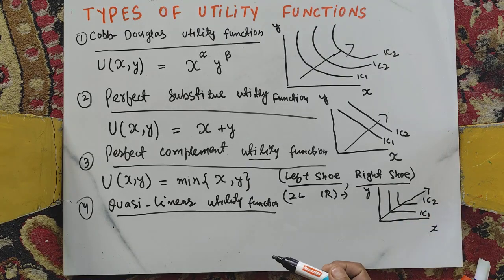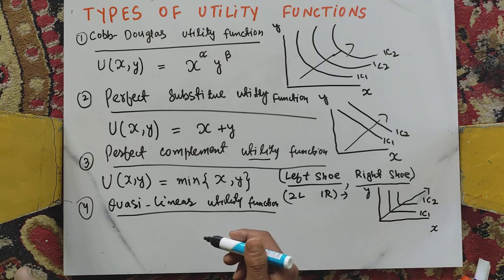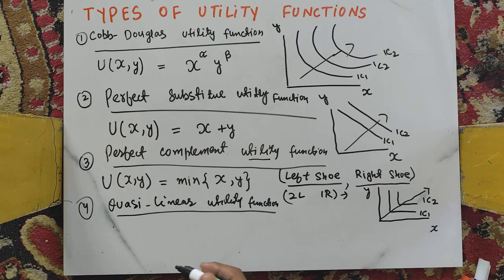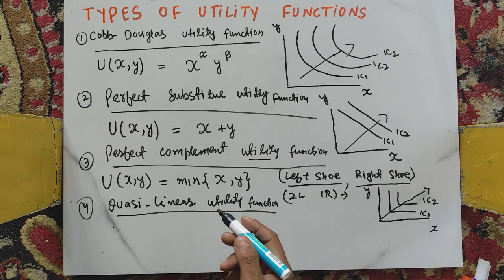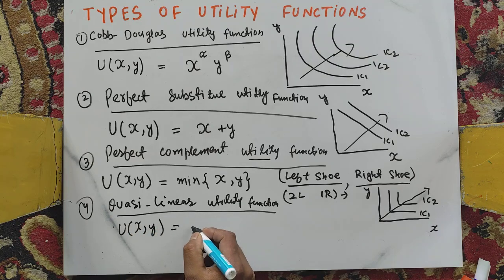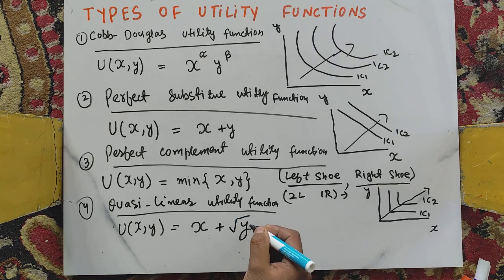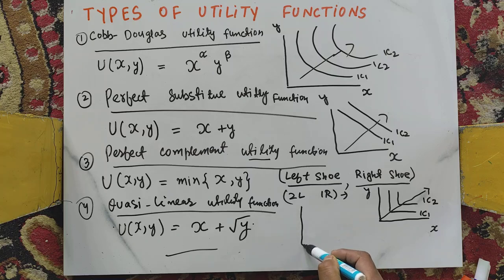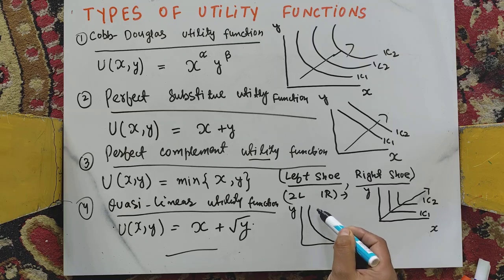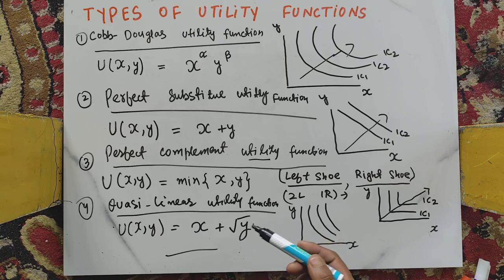For the quasi-linear utility function, one good's utility is linear and the other is nonlinear. Its functional form is utility as a function of X and Y, where one term is linear and the other is nonlinear. On the graph, the indifference curves are vertical translates of each other.